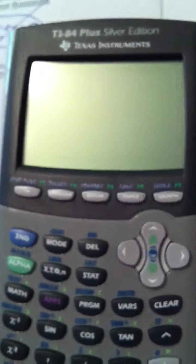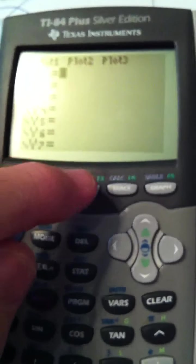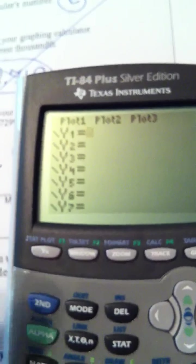If I want to graph that on my graphing calculator, let's make sure it's on. There we go. And I'm always going to verify zoom 6. Okay, and then I'm going to type y equals.